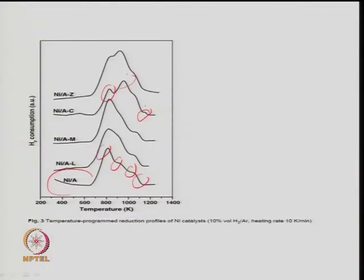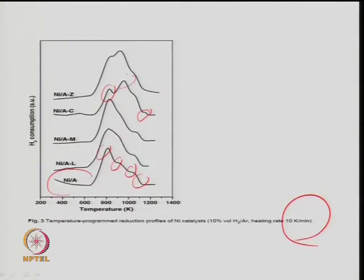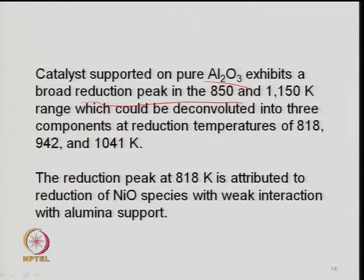Different TPR peaks are related to different reduction temperatures because different phases are formed. For nickel on alumina, you can see one peak here and another at a different temperature. The broad reduction peak at 850 and 1150 K observed for nickel on alumina can be deconvoluted into three components at reduction temperatures of 818, 942, and 1041 K. These can be confirmed through X-ray diffraction, which gives peak intensity based on Bragg's law: λ = 2d·sinθ, where different 2θ values relate to different interplanar d-spacings specific to each phase.